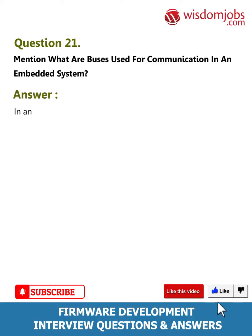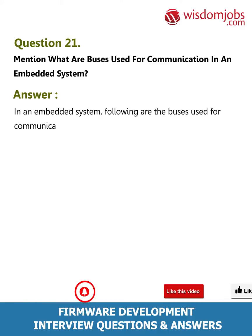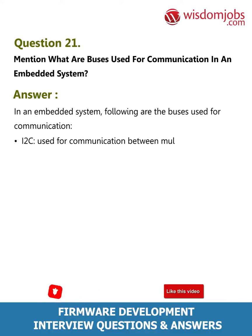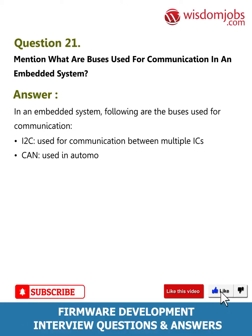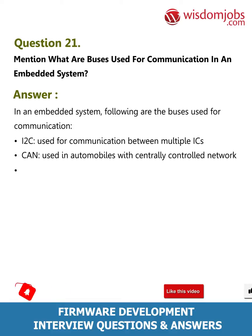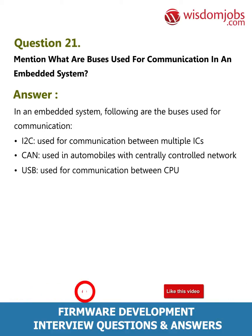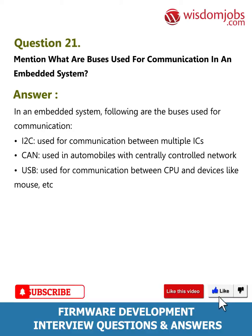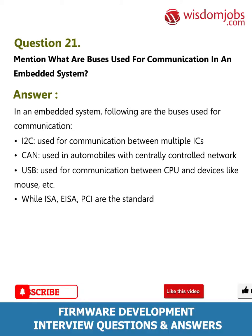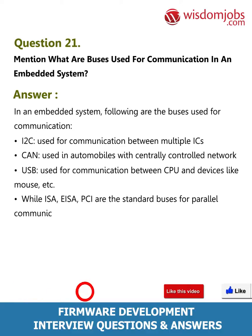Question 21: Mention what buses are used for communication in an embedded system. Answer: In an embedded system, the following buses are used for communication: I2C, used for communication between multiple ICs; CAN, used in automobiles with a centrally controlled network; USB, used for communication between CPU and devices like a mouse. ISA, EISA, and PCI are standard buses for parallel communication used in PCs and other network devices.